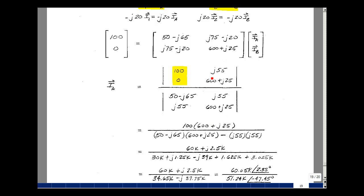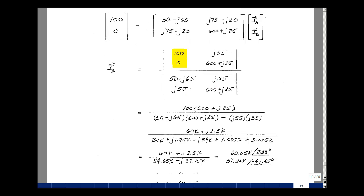So this times this is 100 times 600 plus J 25, and then minus 0, and then I have this quantity here, 50 minus J 65 times 600 plus J 25, that's this term, and then I've got a minus this product, which is J 55 times J 55. Let's multiply this out.